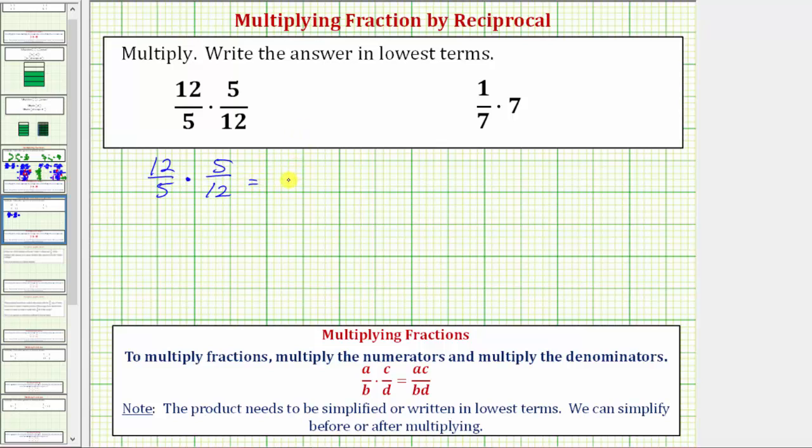To multiply fractions we multiply the numerators and multiply the denominators. So the numerator would be 12 times 5. The denominator would be 5 times 12.